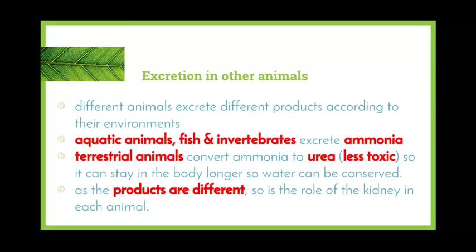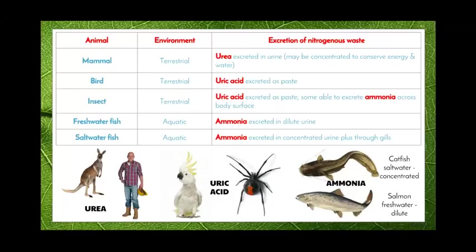Different animals excrete different products according to their environment. Aquatic animals — fish and aquatic invertebrates — excrete ammonia. Terrestrial animals need to convert that ammonia into urea because it's less toxic and needs to stay in the body longer for the kidneys to reabsorb as much water as possible. Looking at the table, mammals, birds and insects are all terrestrial organisms, but only mammals excrete urea. Birds and insects both excrete uric acid, and some insects are also able to excrete ammonia straight across their body's surface.